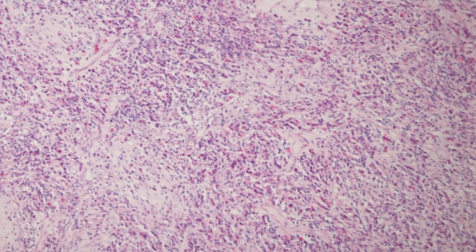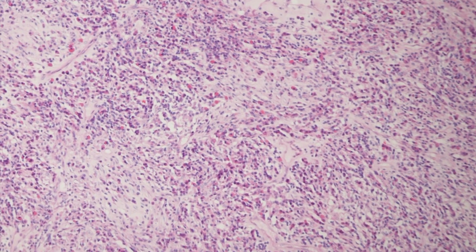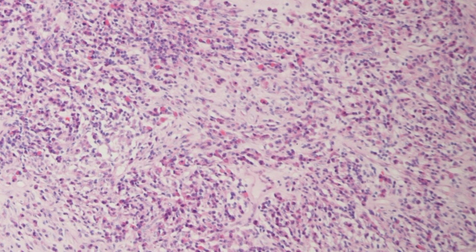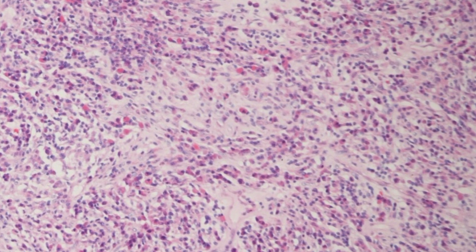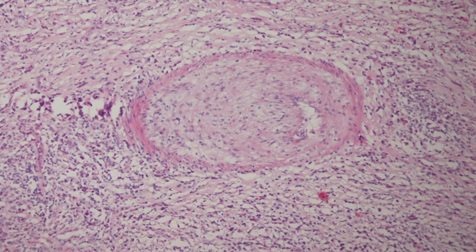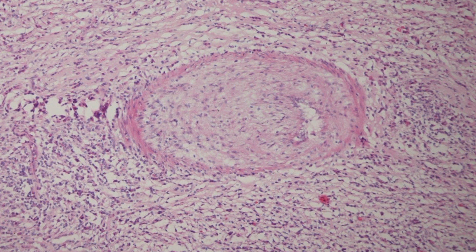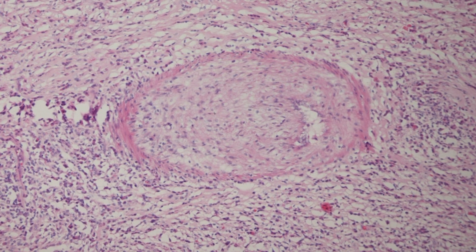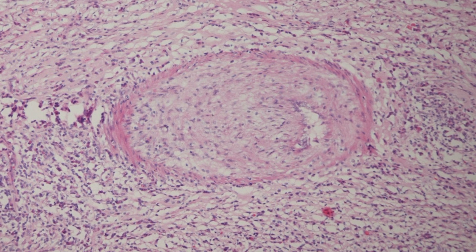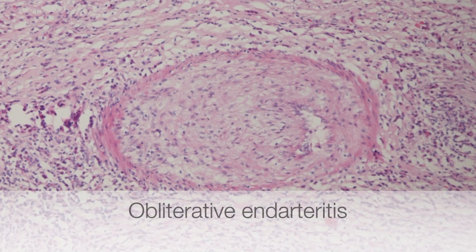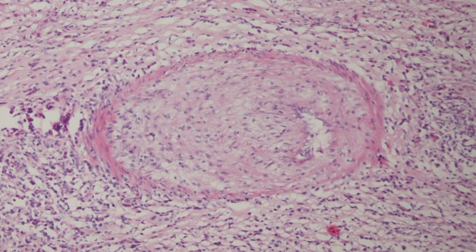Again there is a centre of coagulative necrosis, and in the wall of the gumma there is a particularly florid infiltrate of lymphocytes and plasma cells with a sprinkling of eosinophil polymorphs. In another area of the gumma, at the centre of the picture, is a small artery that can be seen to be occluded by fibrous tissue with only a tiny bit of lumen left. This is endarteritis obliterans, also known as obliterative endarteritis.